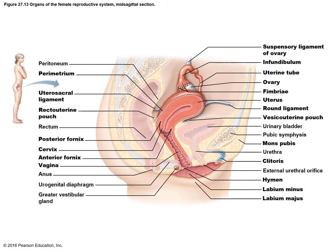On this diagram you can see a mid-sagittal section of the human female reproductive system. You can see external genitalia, vagina, uterus, uterine tubes (also called fallopian tubes), and the ovary shown here in white. Also note that the vagina and uterus are posterior to the urethra and urinary bladder, and anterior to the rectum.